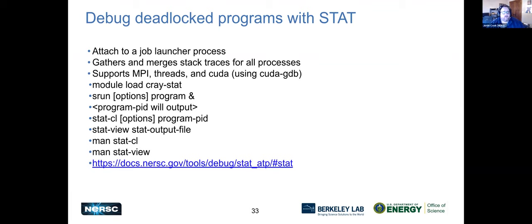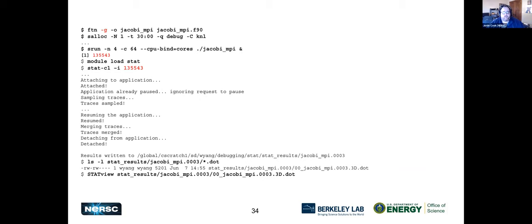The Stack Trace Analysis Toolkit (STAT) can either launch a job or attach to a hung job using a process ID and print out its stack trace. If 99% of your MPI ranks are in one spot and 1% are doing something else, that 1% is where to look for a lock. Use it by doing module load cray-stat, srun your program, get the PID, attach with stat, and use stat-view to view the results.